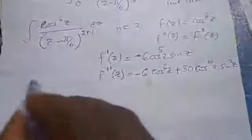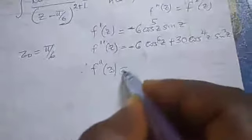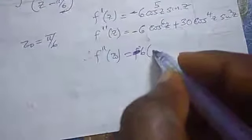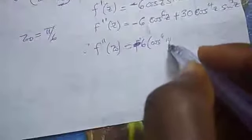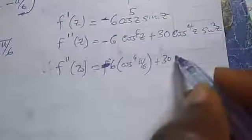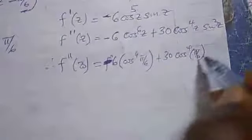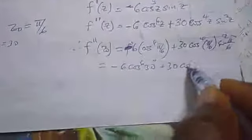Our z₀ = π/6. So f″(z₀) — substituting z = π/6, since π/6 = 30° — gives: −6·cos(6·30°) + 30·cos⁴(30°)·sin²(30°). Simplifying: −6·cos(180°) + 30·cos⁴(30°)·sin²(30°). When we compute and simplify, we get 27/16.